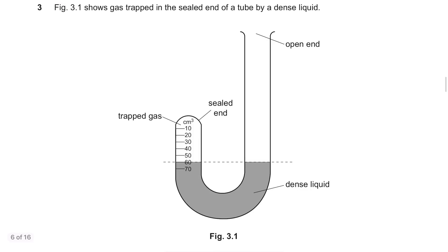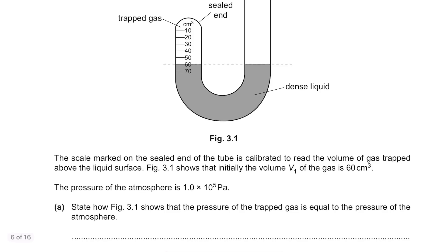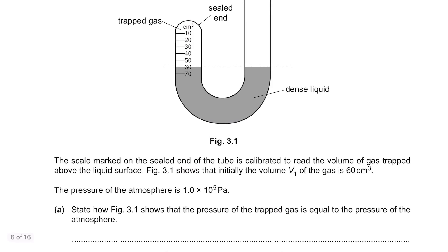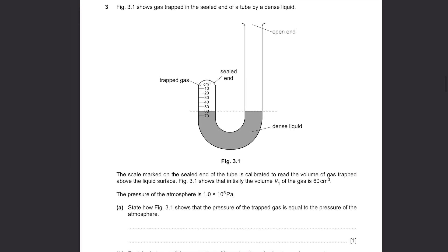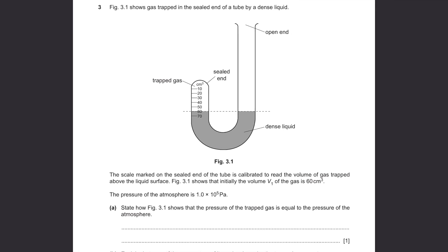Question 3. Figure 3.1 shows gas trapped in the sealed end of a tube by a dense liquid. The scale marked on the sealed end of the tube is calibrated to read the volume of gas trapped above the liquid surface. Figure 3.1 shows that initially the volume V1 of the gas is 60 cm3. The pressure of the atmosphere is 1.0 times 10 to the power 5 pascal. Part A. State how figure 3.1 shows that the pressure of the trapped gas is equal to the pressure of the atmosphere. It is because the liquid levels in both sides are equal. If the pressure was higher here, the liquid will be pushed down and there will be higher level of liquid on this side and vice versa.